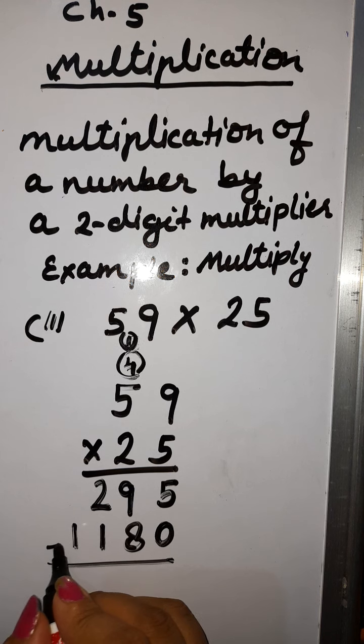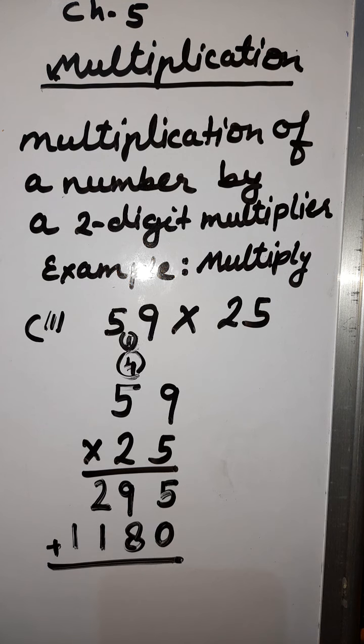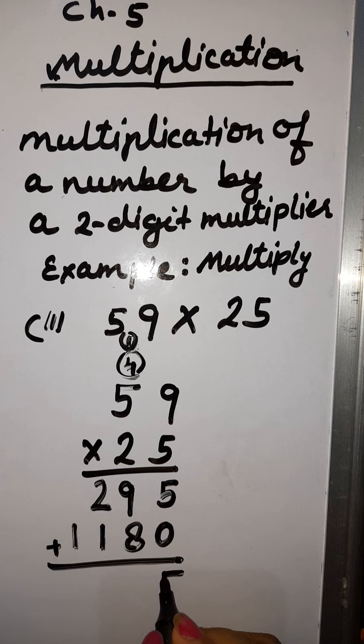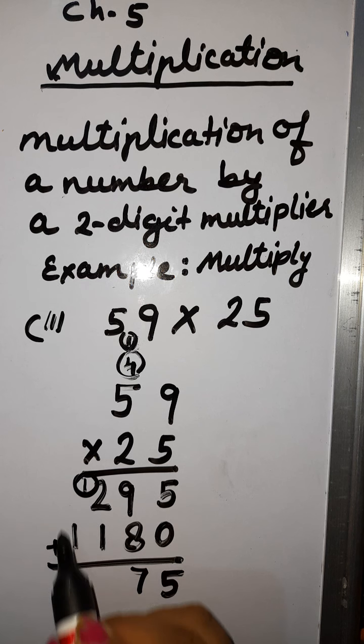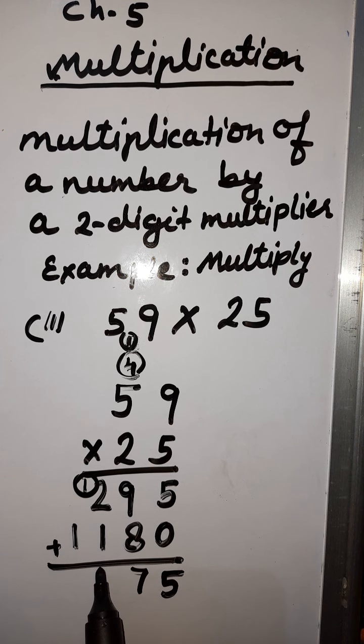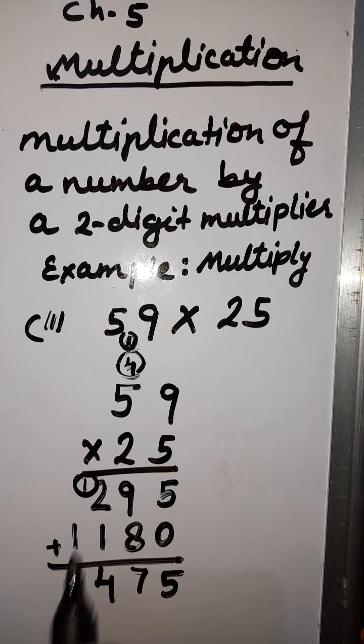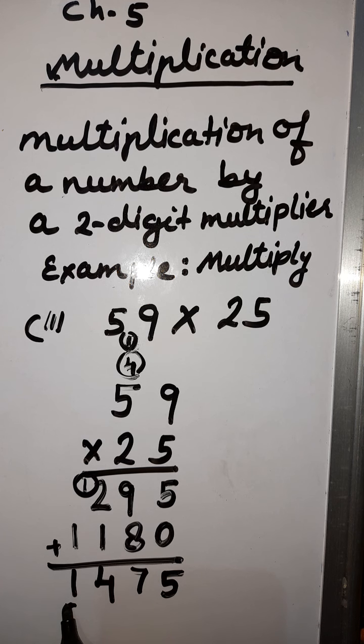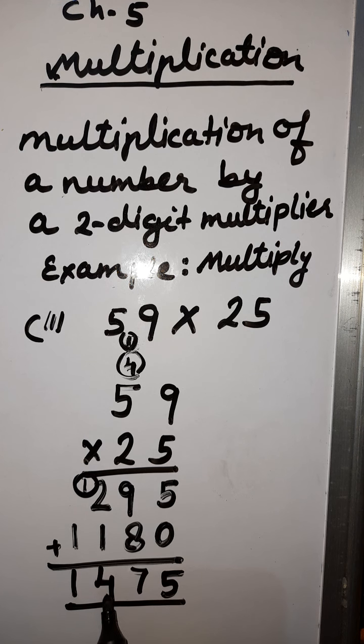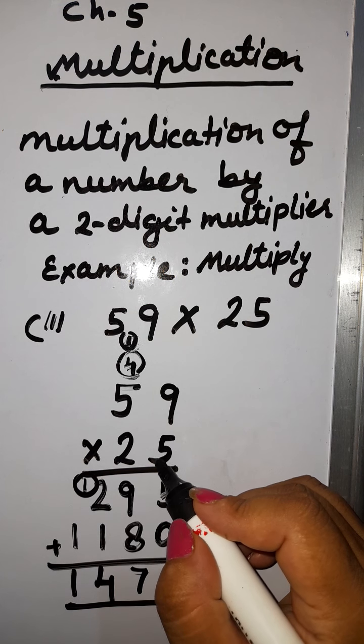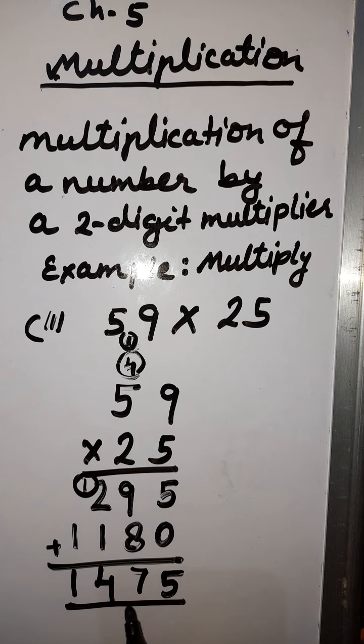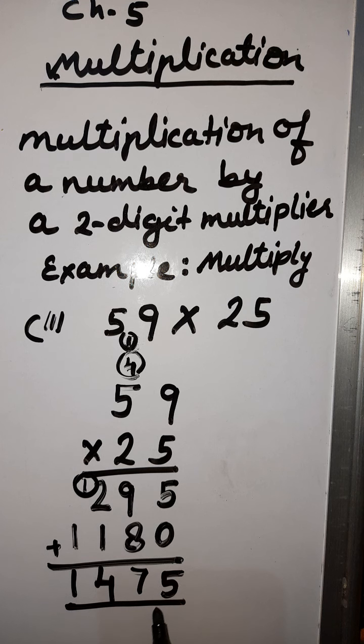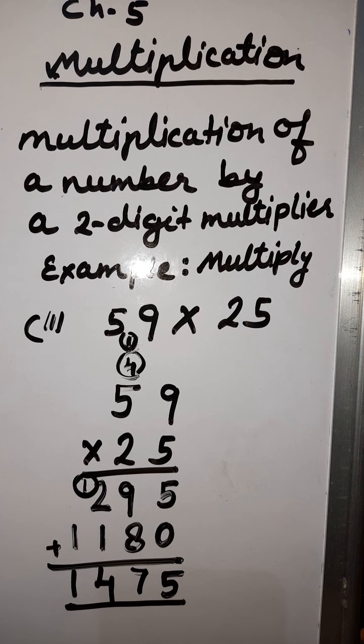Now add both the numbers. This one and this one. 5 plus 0, 5. 9 plus 8, 17. 1 carry. 2 plus 1 plus 1, 4. 1, only 1. So the product is 1475. 59 multiplied by 25 is equal to 1475.